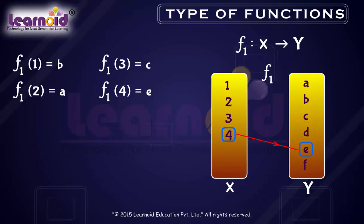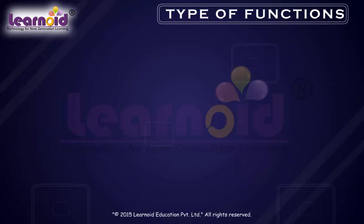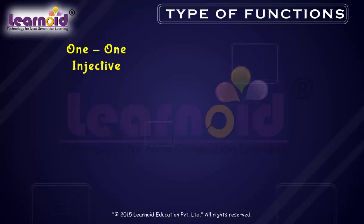We can write: for every x1, x2 belonging to X, f(x1) is not equal to f(x2), or if f(x1) equals f(x2), then it implies x1 equals x2. Such functions are called one-to-one or injective. One-to-one means one element has one image.